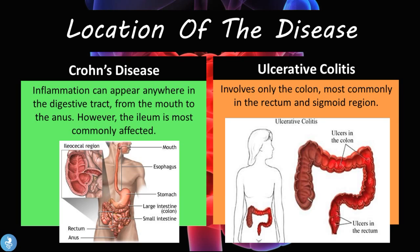In ulcerative colitis, this disease involves only the colon and most commonly occurs in the rectum and sigmoid region. So only the large colon is affected, and the most commonly affected areas are the sigmoid colon and the rectum, which is this area around here.